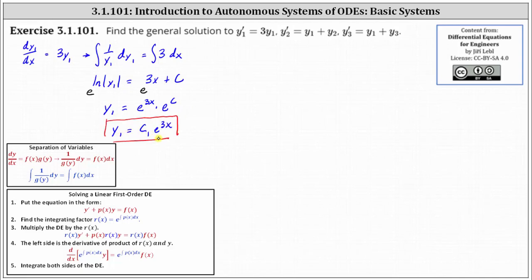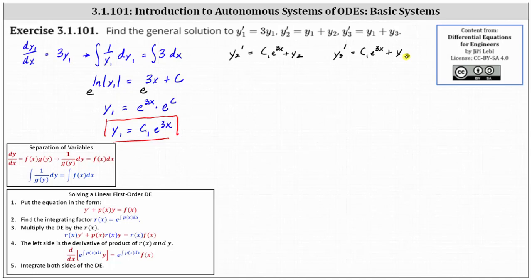Now that y one equals c one e to the three x, we substitute this into the second and third differential equations. The second equation becomes y two prime equals c one e to the three x plus y two, and the third becomes y three prime equals c one e to the three x plus y three. We solve both using an integrating factor. Before applying that method, we subtract y two from both sides of the second equation and subtract y three from both sides of the third.